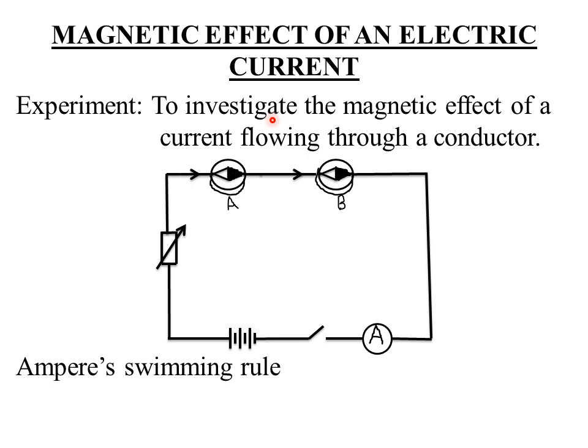To demonstrate his discovery, he carried out an experiment in the year 1820. The experiment is to investigate the magnetic effect of a current flowing through a conductor.